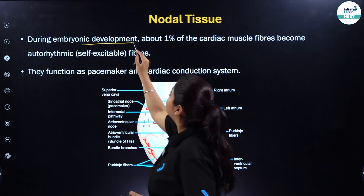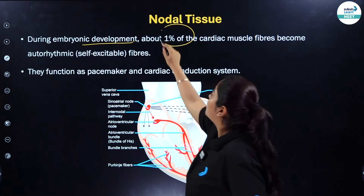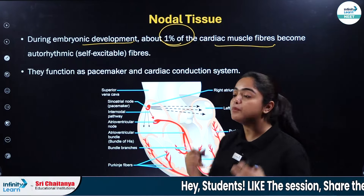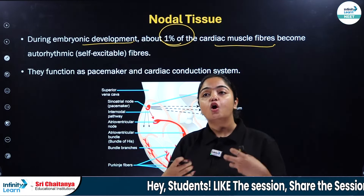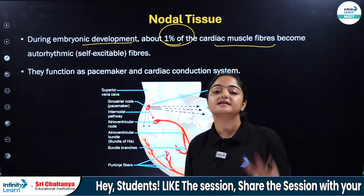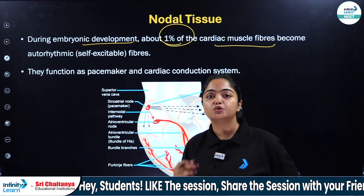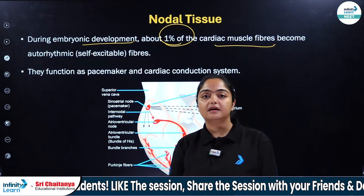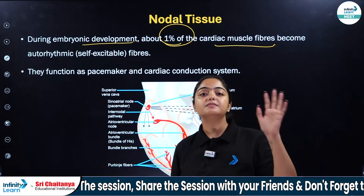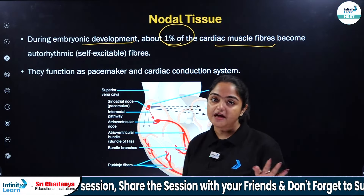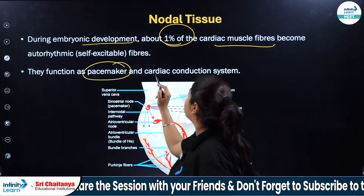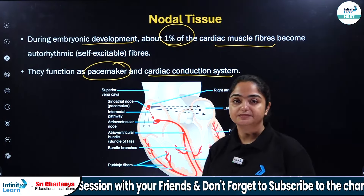During embryonic development, about 1% of the cardiac muscle fibers become auto-rhythmic fibers, and that is why we also call them self-excitable fibers. You don't have to voluntarily control them — these become the involuntary fibers as well, and they function as the pacemaker and cardiac conduction system.